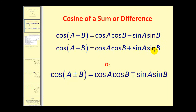Instead of writing this as two different identities, sometimes it's written with a plus-or-minus sign on one side and a minus-plus sign on the other. So if we use the addition sign on the left, we would use the subtraction sign on the right, and vice versa.